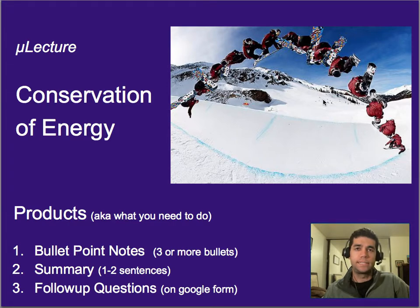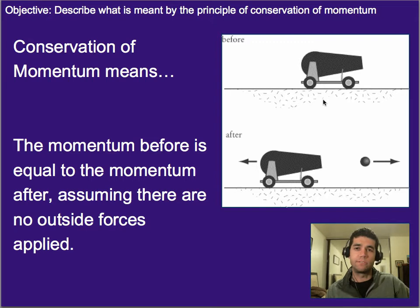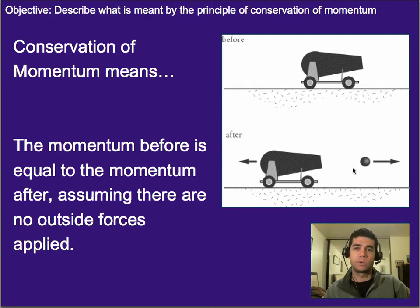What we're going to look at is this idea of energy. But before we do that, let's review what conservation of momentum meant — mainly, the idea that momentum before is equal to momentum after. We're assuming it's a closed system, meaning there are no outside forces acting on it. So if you had a cannonball with zero momentum before, then afterwards the total momentum will still be zero. Even though one part is moving this way and one is moving the other way, they cancel out in terms of momentum.